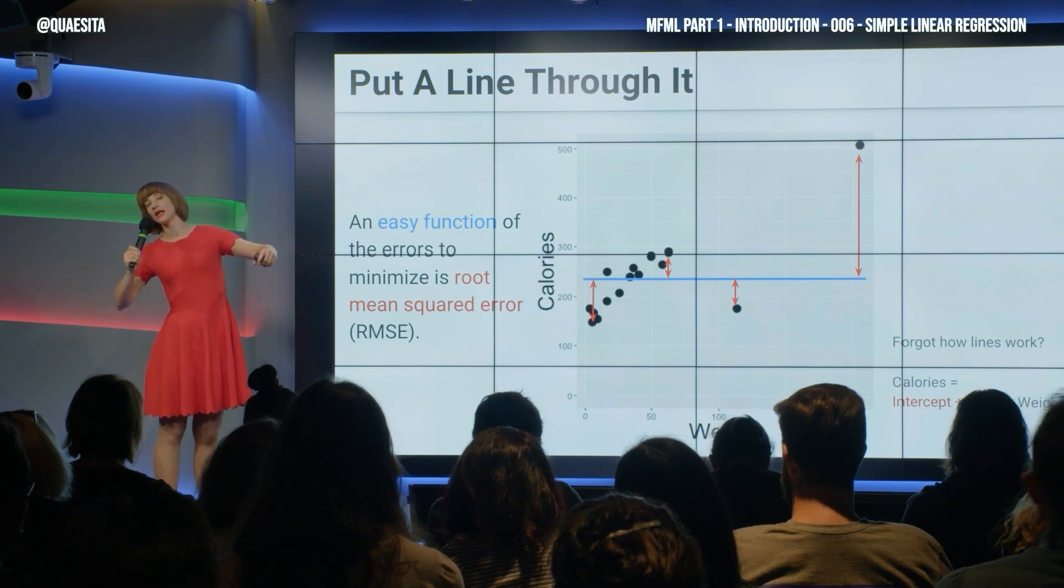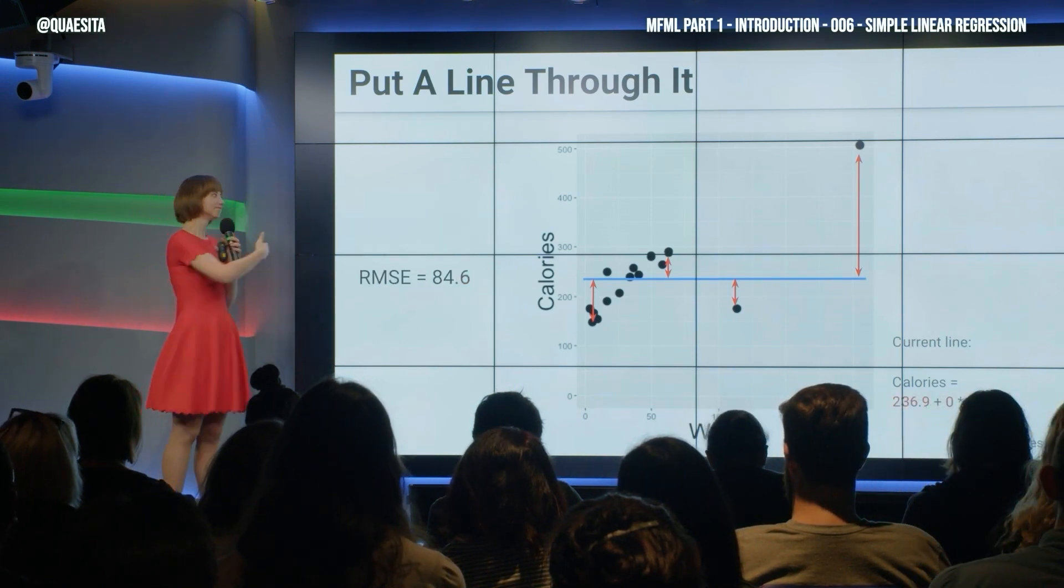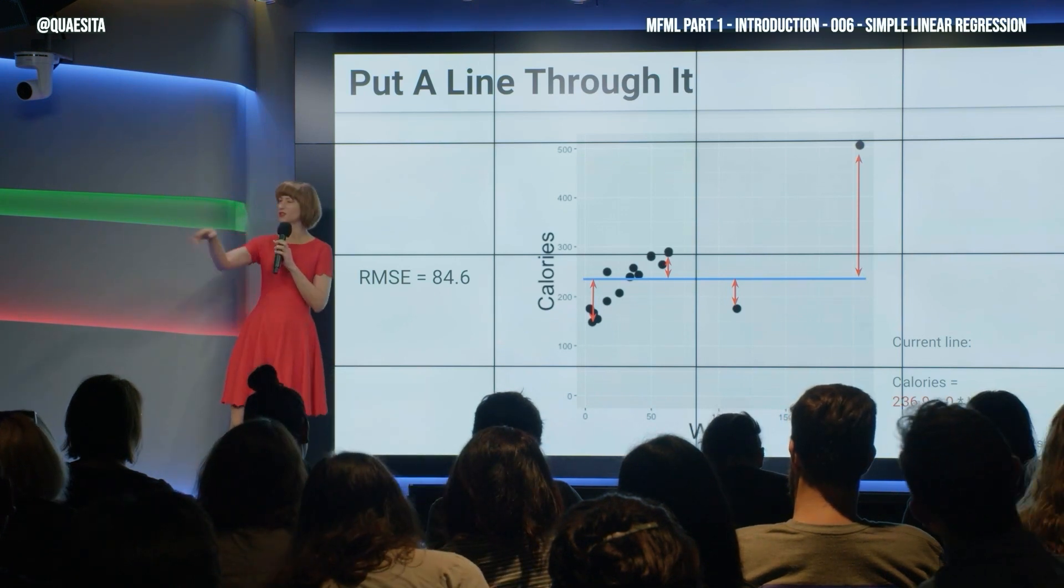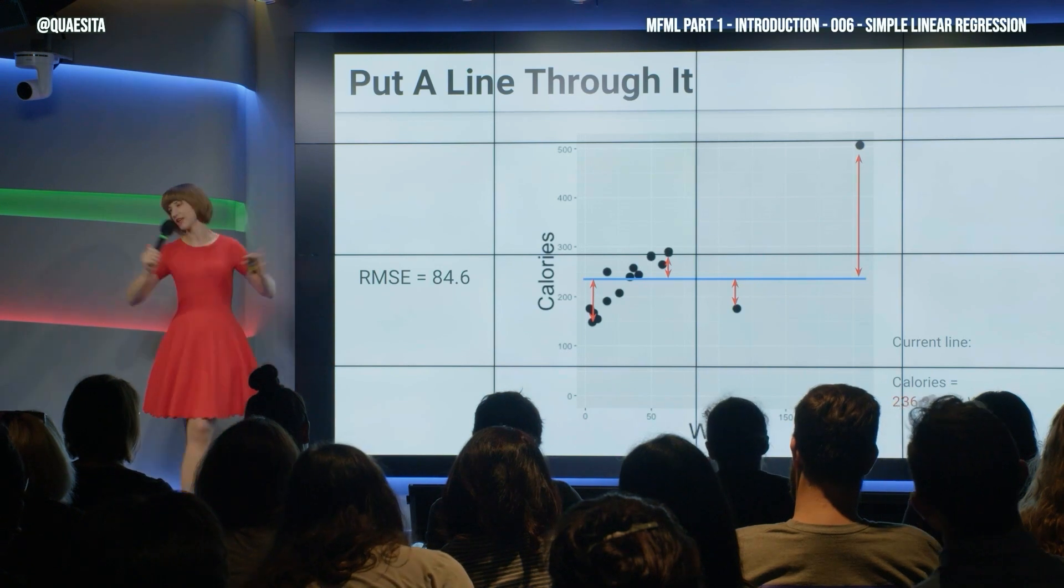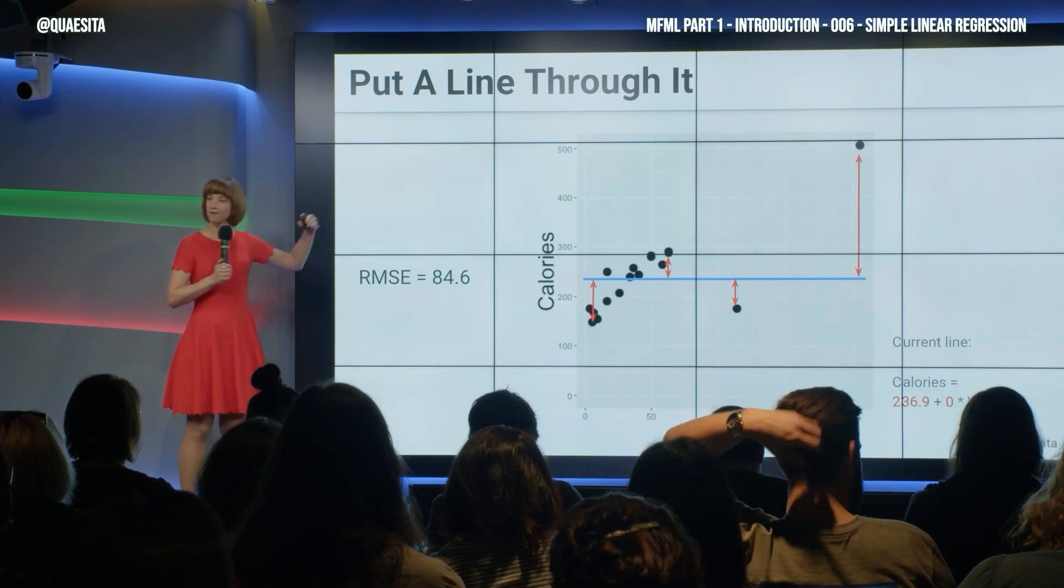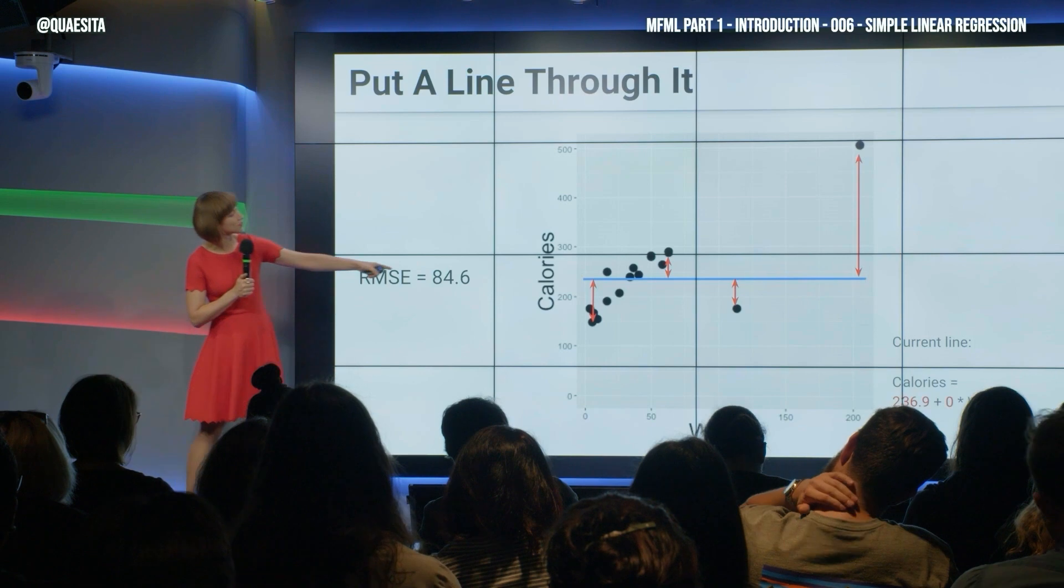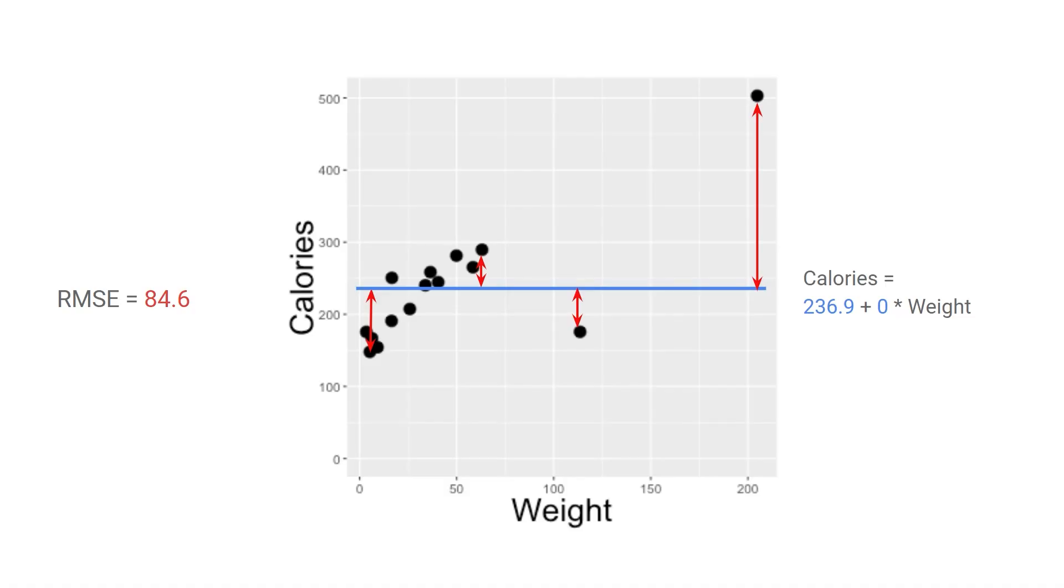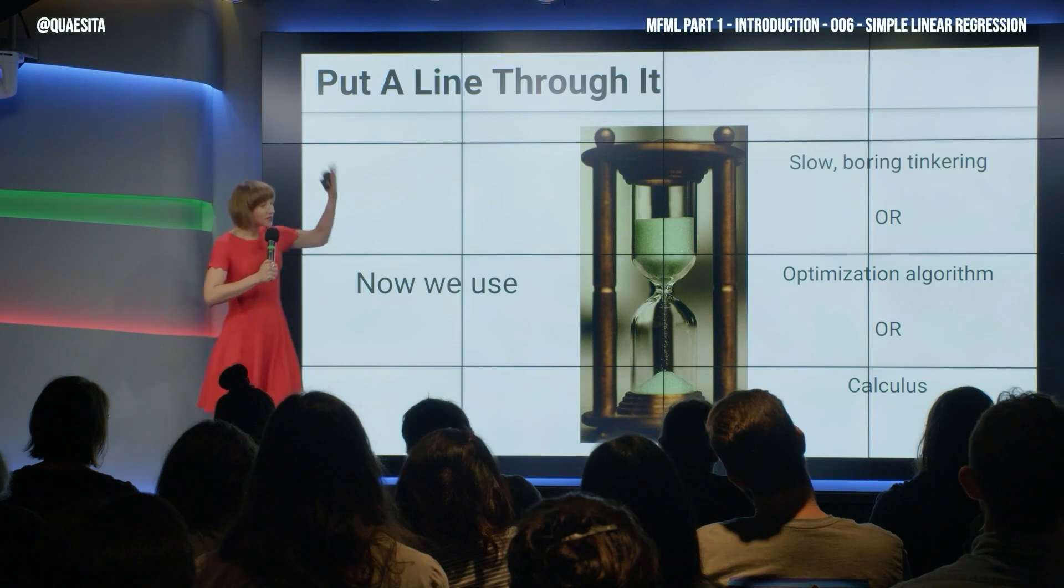Or you could just think of the RMSE as the calories we're off by on average. Not technically correct, but good enough for government work. We're off by about 85 calories on average. And that will do. So, now we're off by 85 and we want to be off by fewer. So, let's see if we can just jiggle those two parameters there in the recipe to make things better. What do you want to do? Maybe you want to increase the slope a bit. Okay. That's getting better. Good. How about we increase the slope a little more? Not so much better. Maybe now we want to move the intercept down. So, let's do that. And what we could do is we could continue tinkering with these two numbers. Slow, boring tinkering. Or we could get on with it.